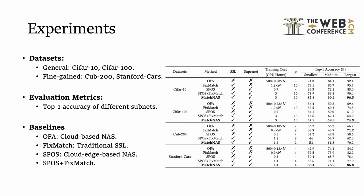We have experiments on four datasets. We evaluate the top-one accuracy for three different sizes of subnetworks, with four baselines. Our MatchNet reports a better trade-off between the training cost and the top-one accuracy.